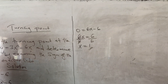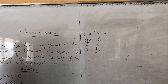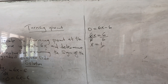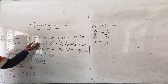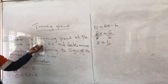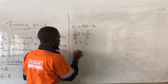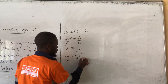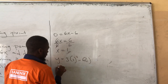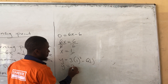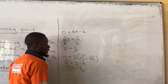We have found the value of x. The next thing is to find the value of y. We find y by substituting the value of x. Wherever there is x, we put 1. So it will be y equals 3 times 1 squared minus 6 times 1, which gives us 3 minus 6, equaling negative 3.